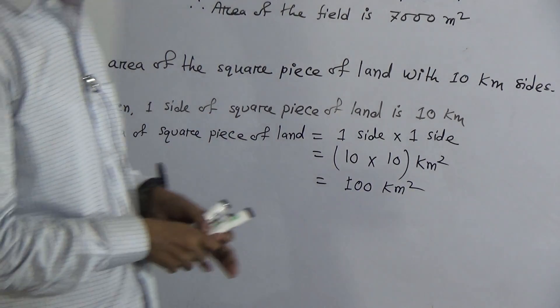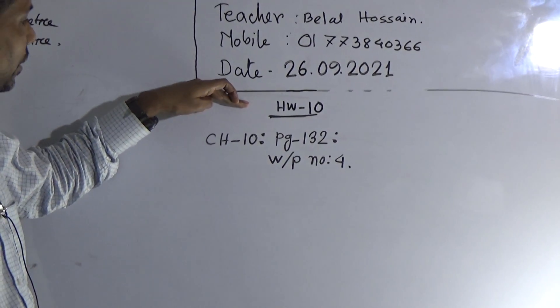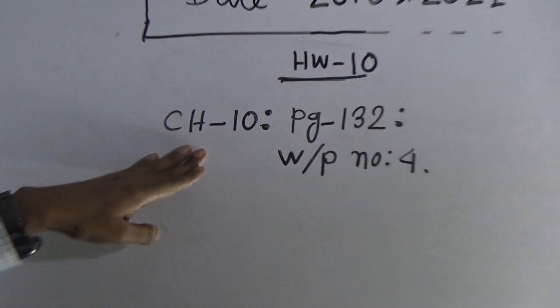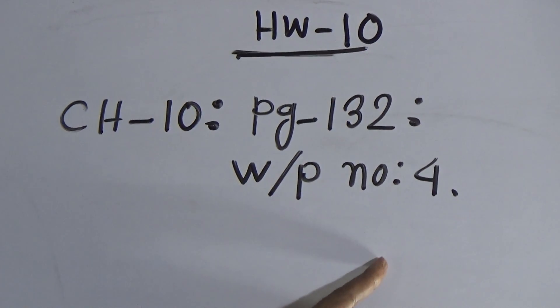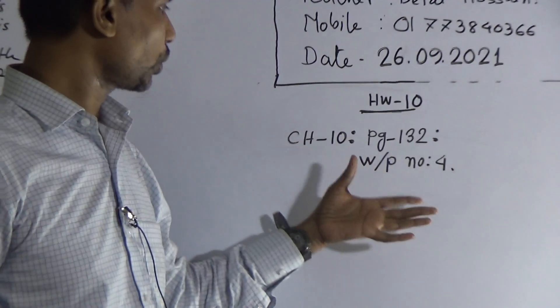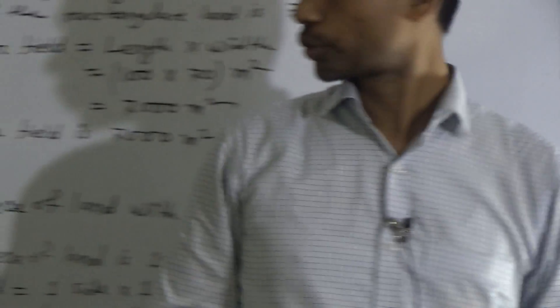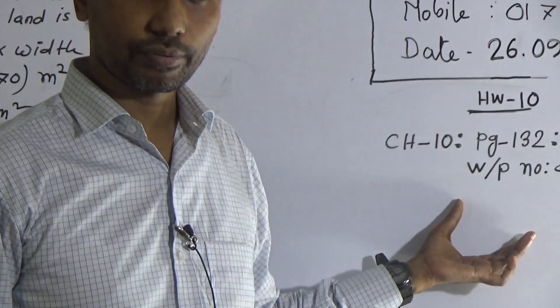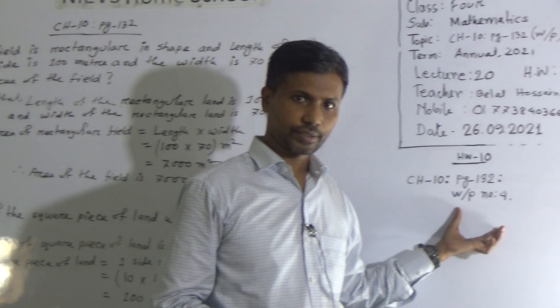Now look, your HW is 10, chapter 10, page 132, word problem number 4. You have to solve the question number 4, same as question number 3 and 5. And this question answer is only 6.